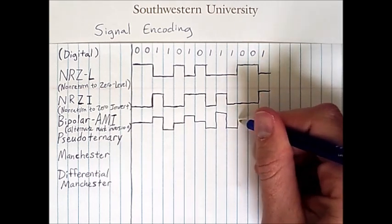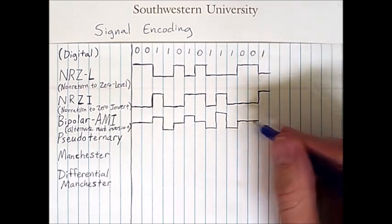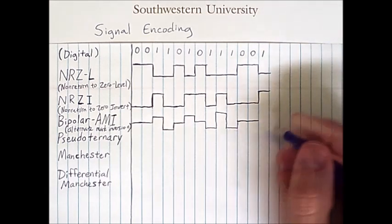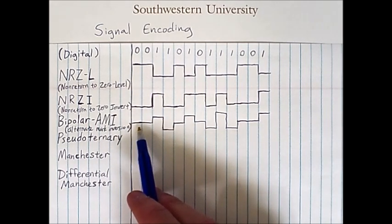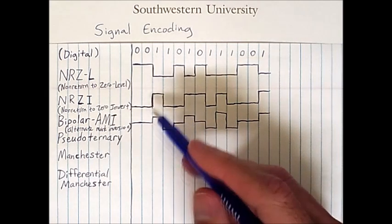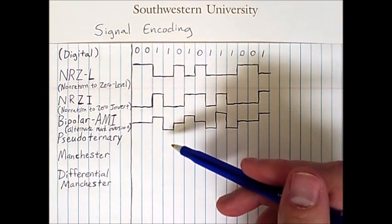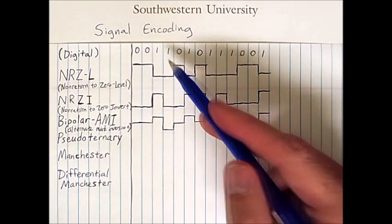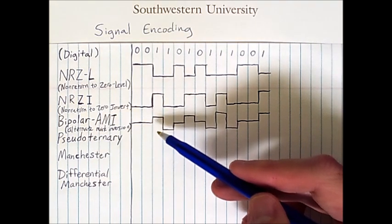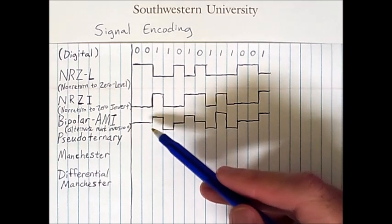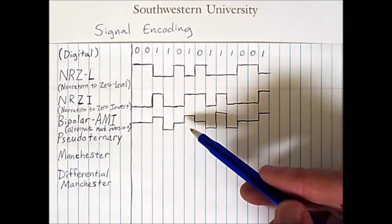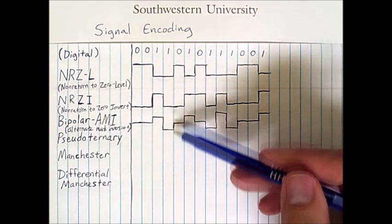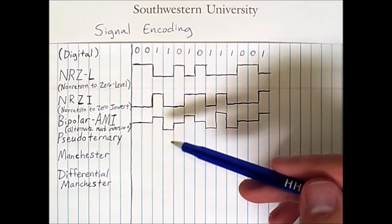After the three alternating ones, we have two zeros giving a flat signal for two time units, and then we end with a one which is positive because the preceding one had a negative voltage. In this scheme, zero is always encoded with no line signal at a middle level of zero voltage, and the one alternates between positive and negative voltage. The alternations in the ones provide extra synchronization information for the receiver — long sequences of bits can be stretched or distorted by transmission, and sender/receiver clocks may drift over time, but each transition in a sequence of ones indicates to the receiver where bit transitions occur, helping to resynchronize.